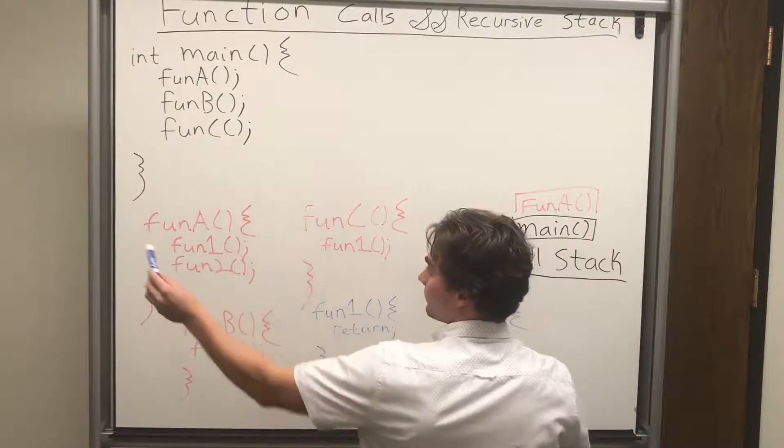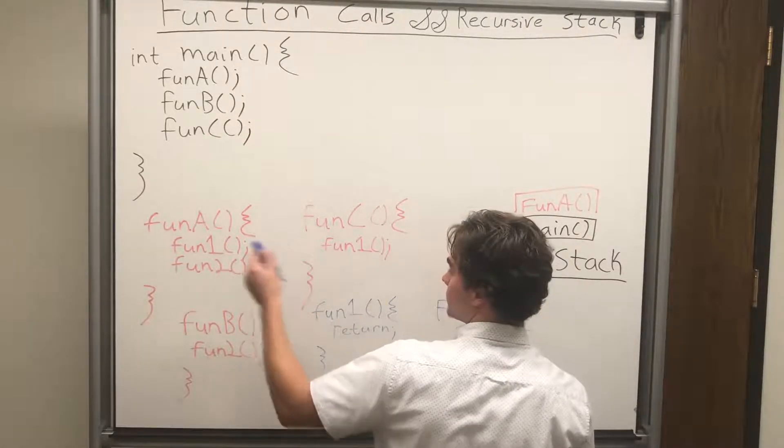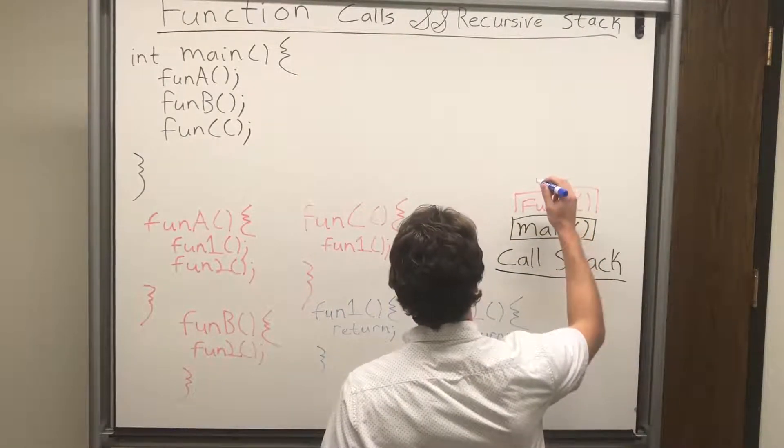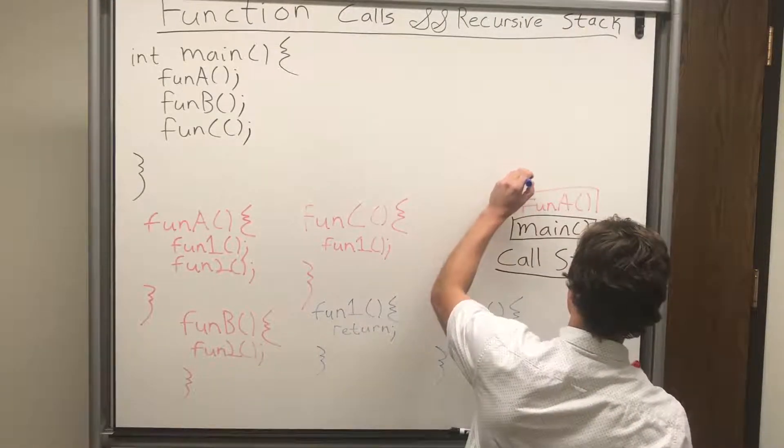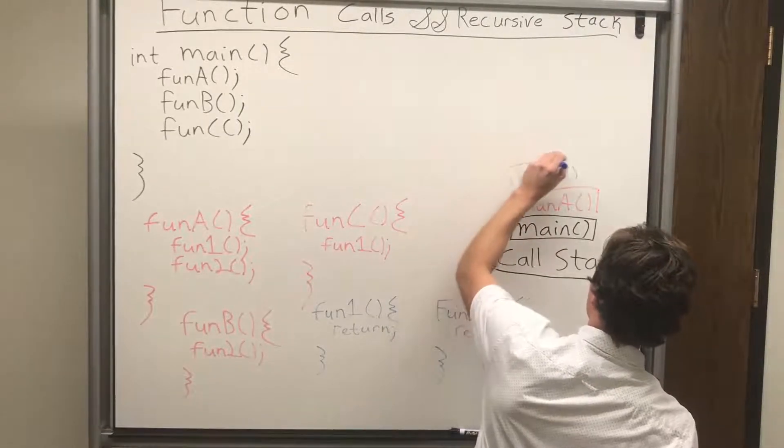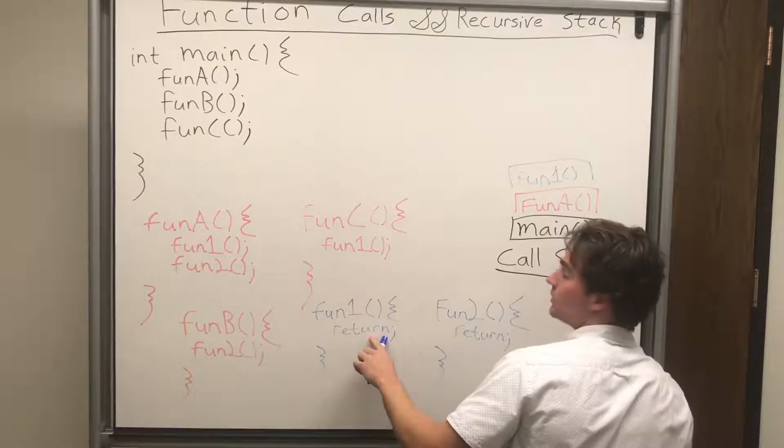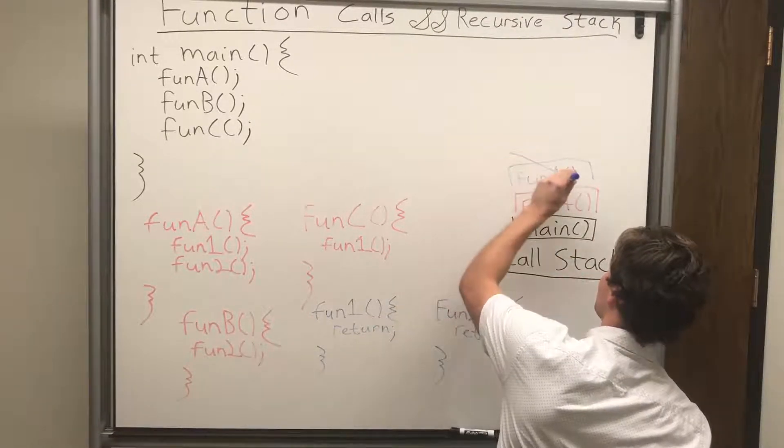And next, we go into what function A does, right over here. And function A looks like it's called function 1 first. So we need to get this done. So we push it on top of the stack. Right there. And function 1, all it is going to do is return. Very simple. So once this is completed, we can pop it off the function call stack.